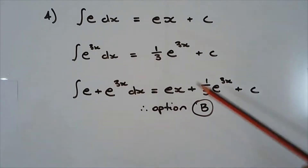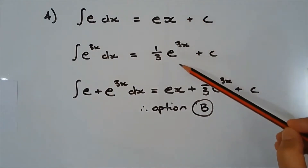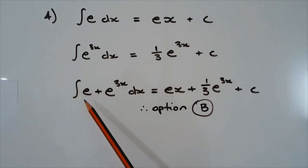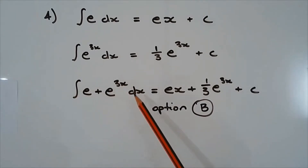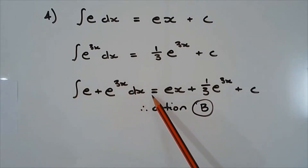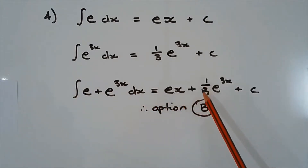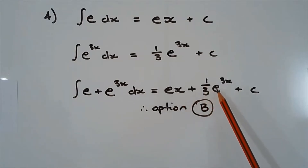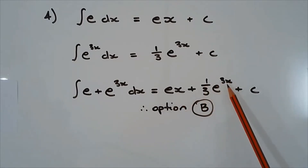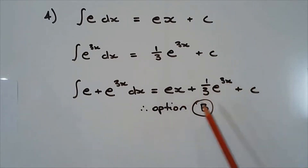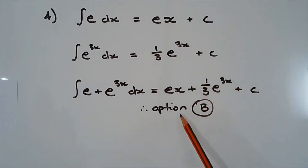Combining these two results, the integral of E plus E to the power of 3x with respect to x is Ex plus one-third multiplied by E to the power of 3x plus some constant c. Therefore, the answer is option B.